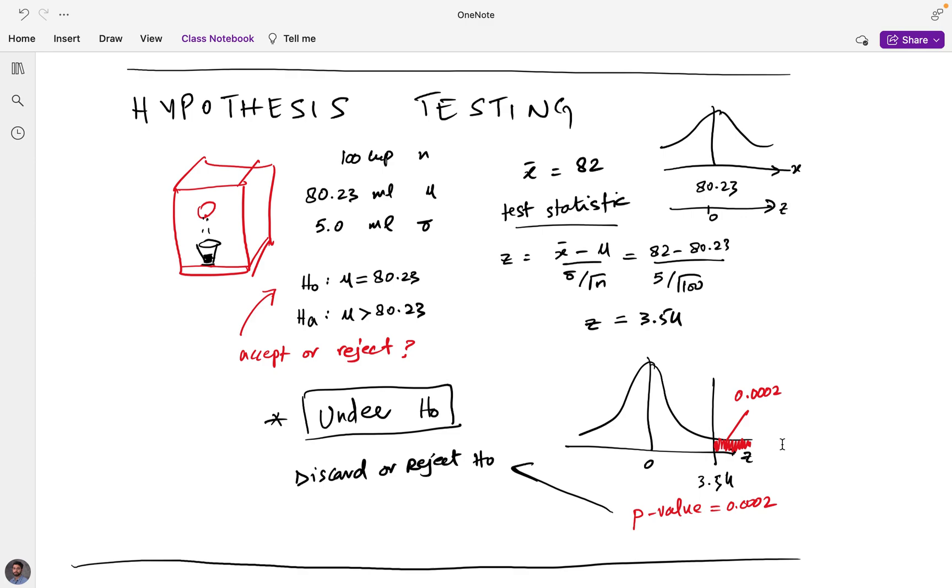Therefore, this is in fact true, this is in fact what's happening, this is the phenomena that is dominating, and this is evidence enough to reject the null hypothesis. Remember, we work this under the assumption that null hypothesis is true—80.23 is what happens. But if you got 82, that means we are now having some sort of concrete evidence to reject the null hypothesis.